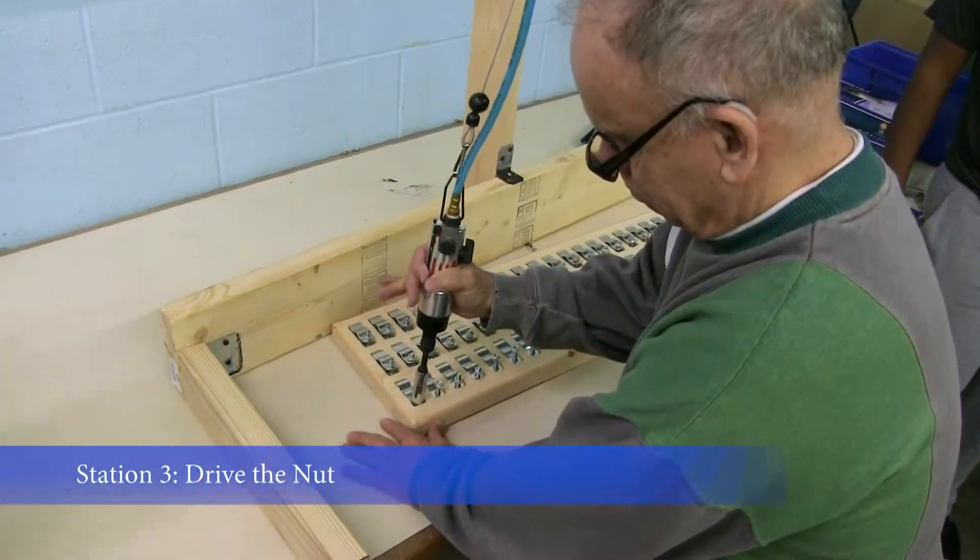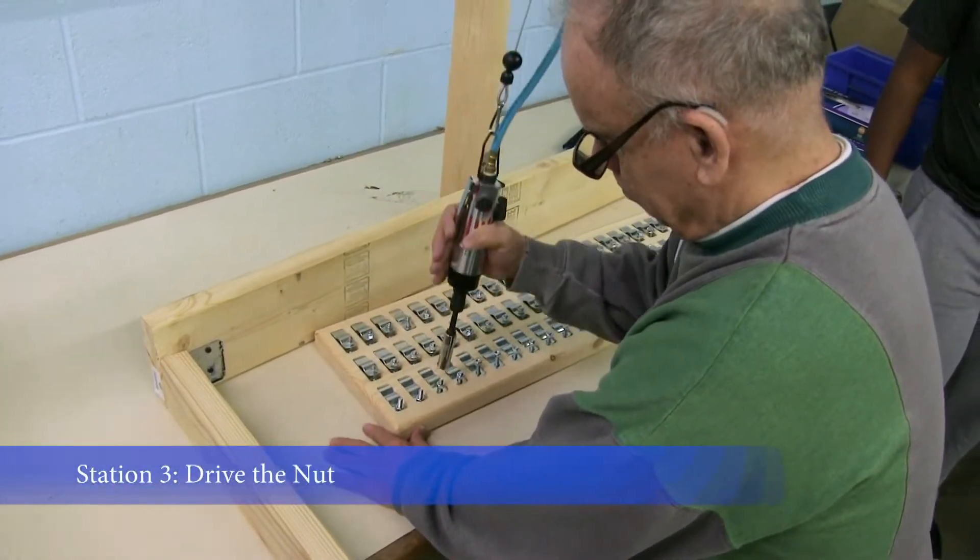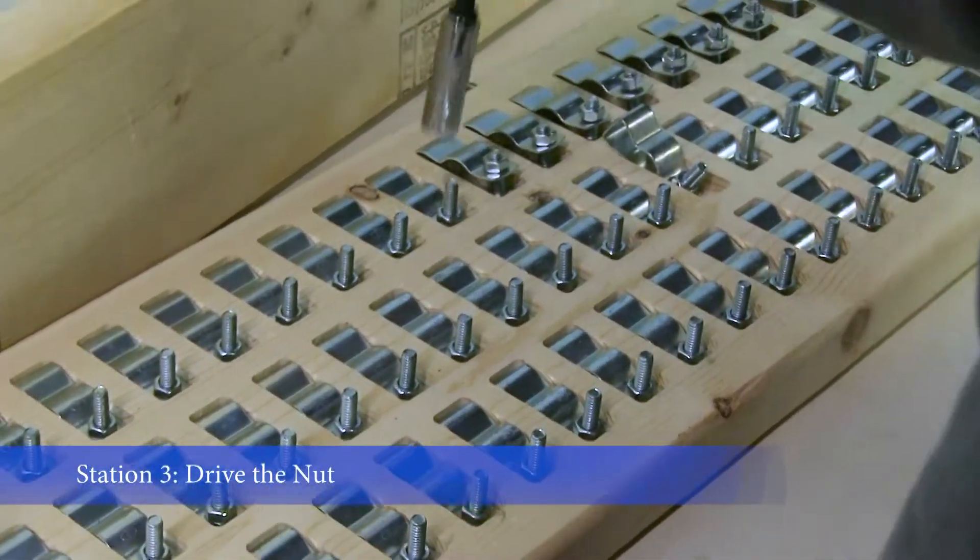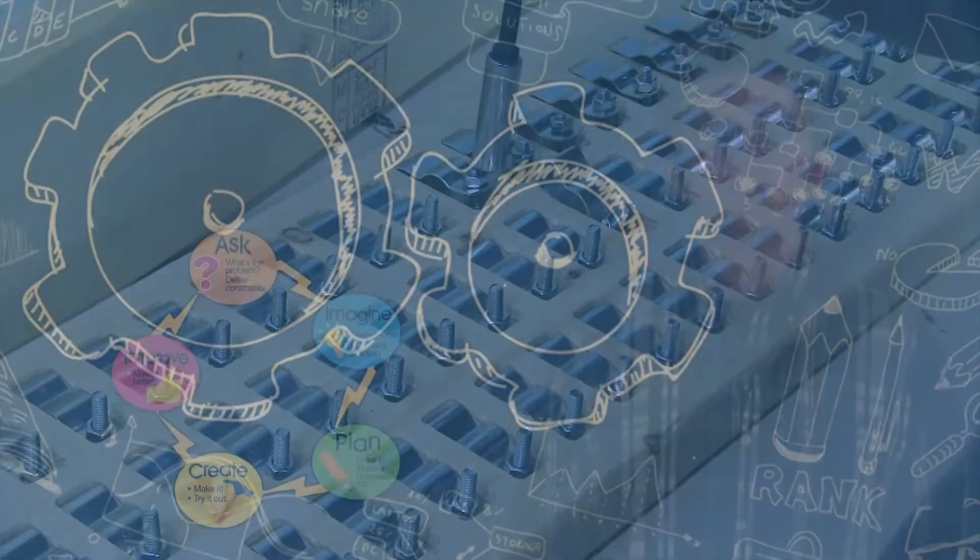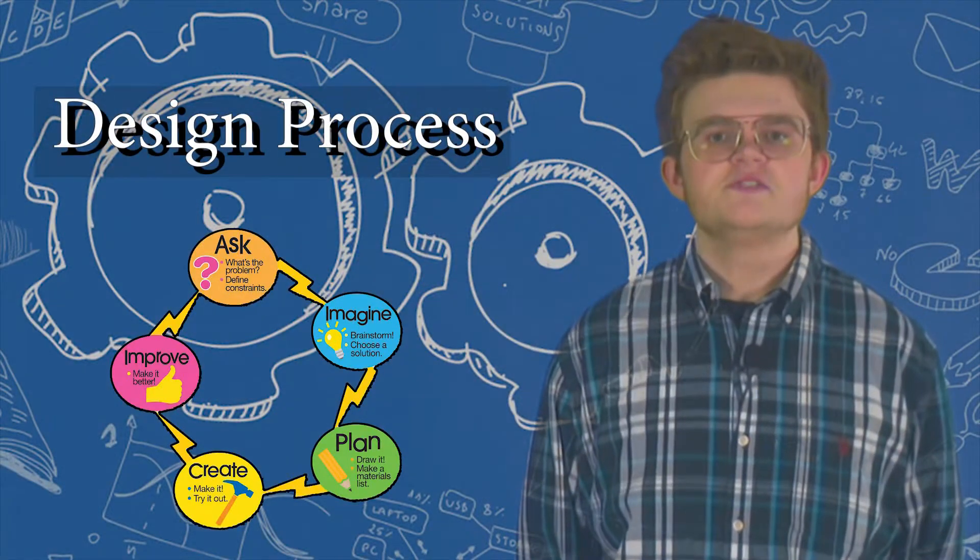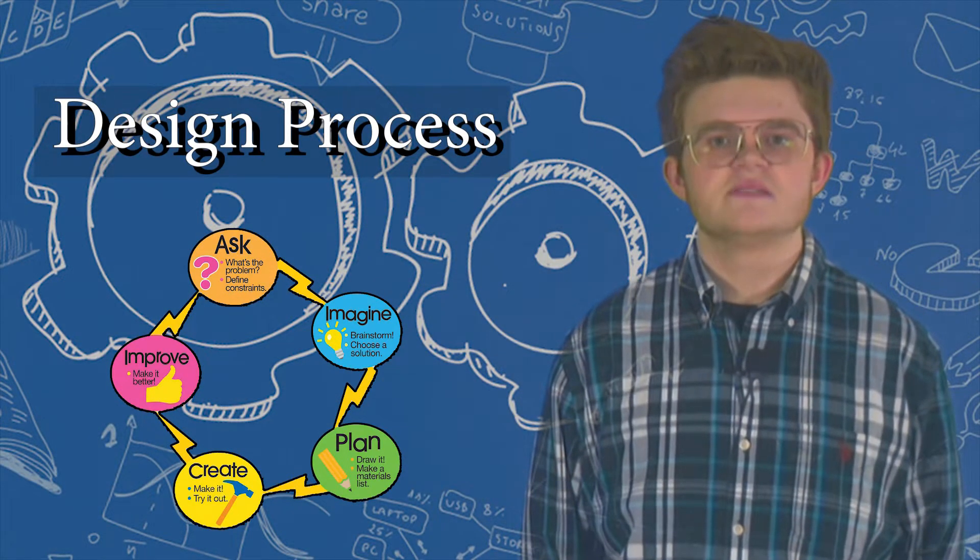At station three, the final employee uses a suspended air drill to screw down the nut, clamping the bracket shut and completing the process. Now that you have seen how we have changed and improved the assembly process, this is how we did it.